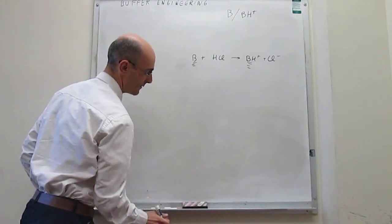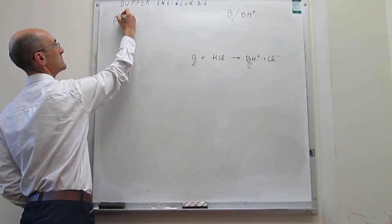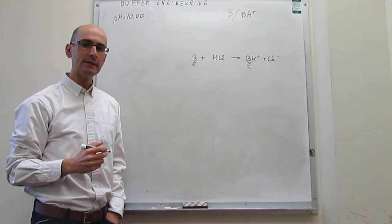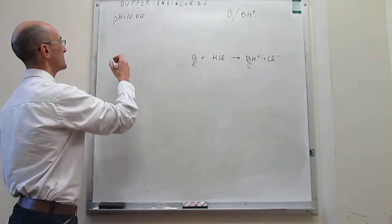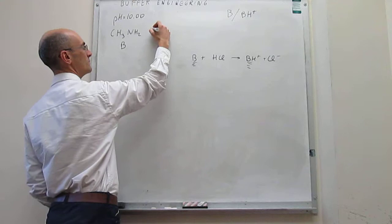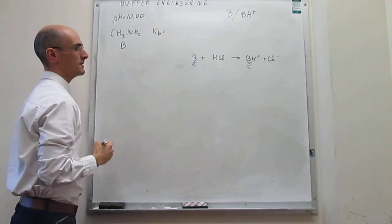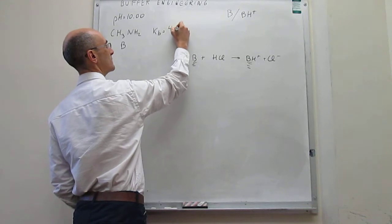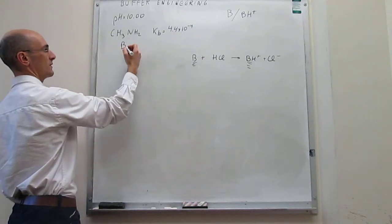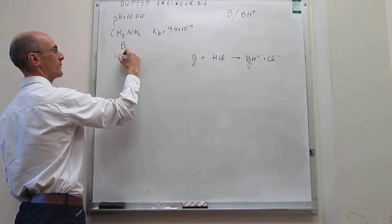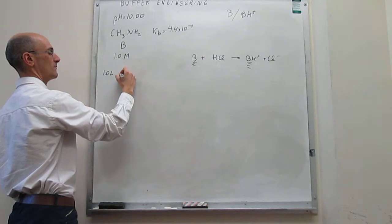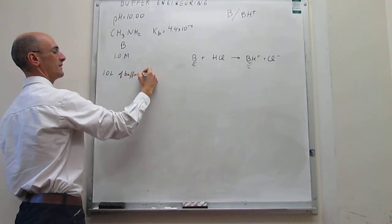We need a buffer at pH 10. The only thing we have at our disposal is a base called methylamine, CH₃NH₂, which we'll simply call B. The Kb of this weak base has a value of 4.4 × 10⁻⁴. The solution we have has a molarity of 1.0 molar, and we need 1.0 liter of the buffer. The target pH is 10.